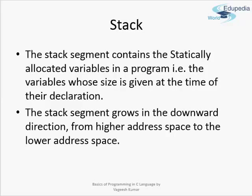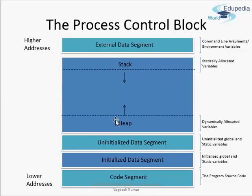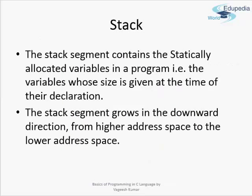The stack segment lies at the higher addresses of the process control block and grows from higher addresses to lower addresses. The stack segment contains the statically allocated variables in the program. In C, we can allocate variables in two ways: statically and dynamically. In the basic C programming course we will learn static declarations first. Static variables are allocated a space in the stack segment at the point of declaration — the compiler itself allocates the memory space without any user instruction.